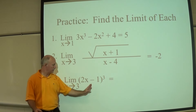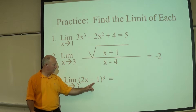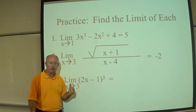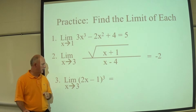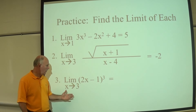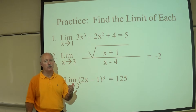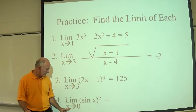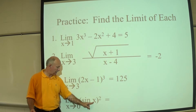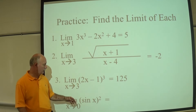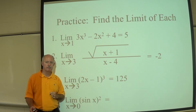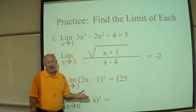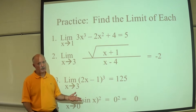The limit as X approaches 3 of the quantity 2X minus 1 raised to the third power: pause and try it. Substituting 3 in for X gives 2 times 3 minus 1, which is 5, and 5 to the third power is 125. One more: the limit as X approaches 0 of sine X squared. Sine of 0 is 0, and 0 squared is 0.